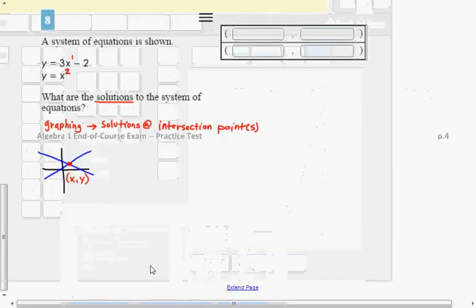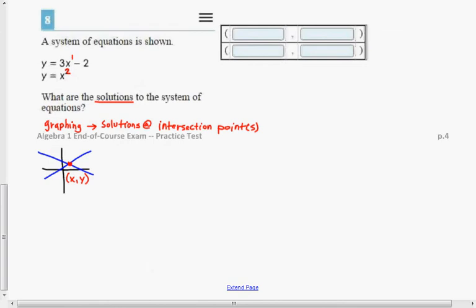So, let's go back over here and let's test this. The ordered pair 2, 4 and the ordered pair 1, 1. It looks to me like those are the two places where those two graphs intersect. So, let's just do a quick check and see. Y equals 3x minus 2. And, then, y equals x squared.